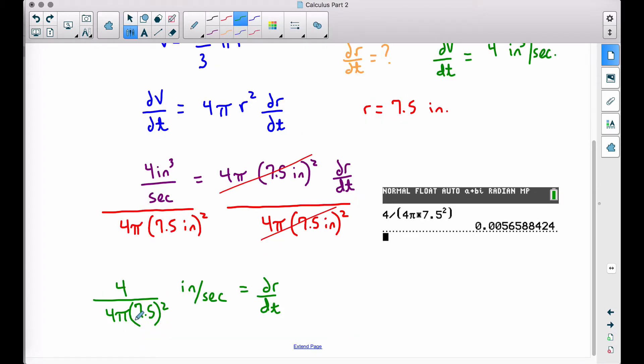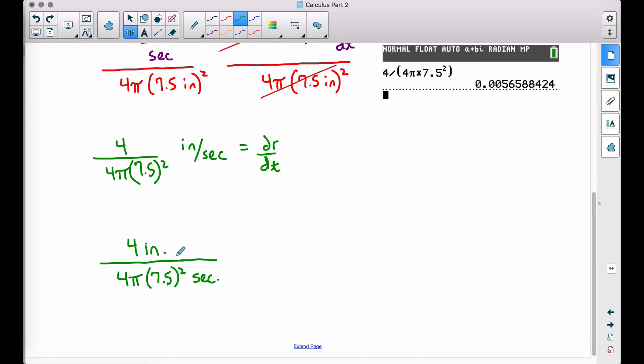So notice I have the exact same answer written right here, 4 over 4π times 7.5 squared inches per second. This is dr/dt. Now to convert this to inches per minute, we need to do a little bit of dimensional analysis.